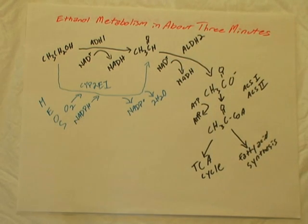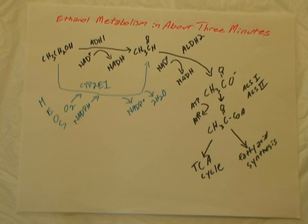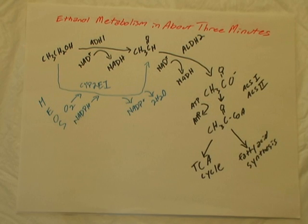The KM value for CYP2E1 towards ethanol is much higher than for ADH1, so the affinity of ADH1 is much higher. Therefore, the MEOS system is primarily active in people who consume a large amount of alcohol.